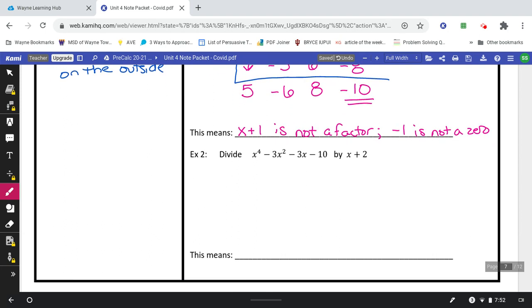Example number 2. There's one special case here. Notice that there's no x to the 3rd. It jumps from x to the 4th down to negative 3x squared. So if you're missing a term, like x to the 3rd for us, you just have to put in a 0.